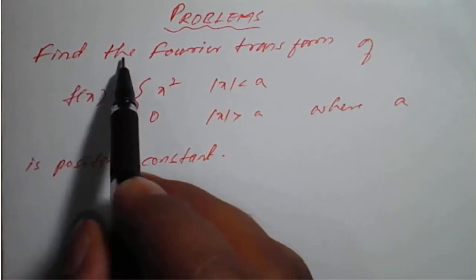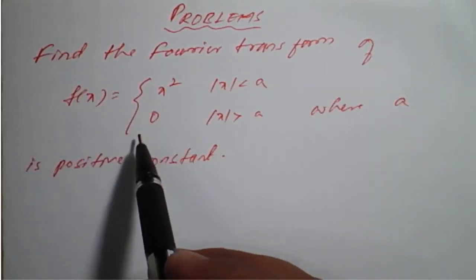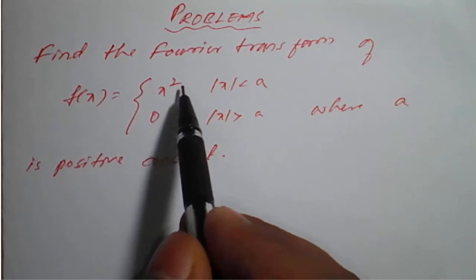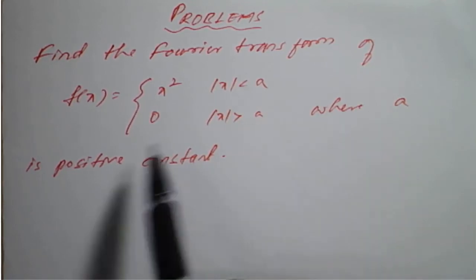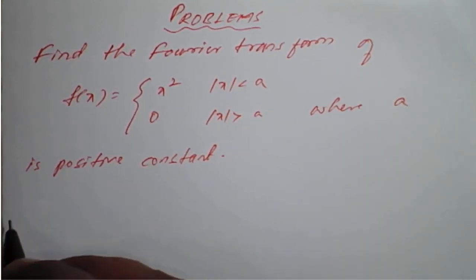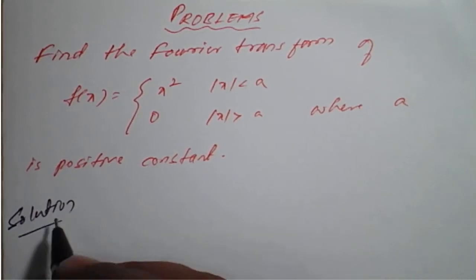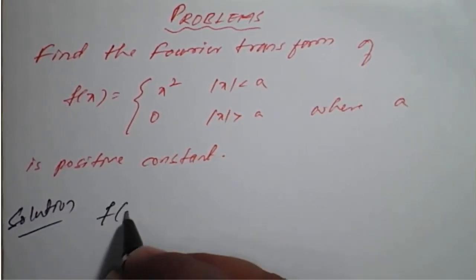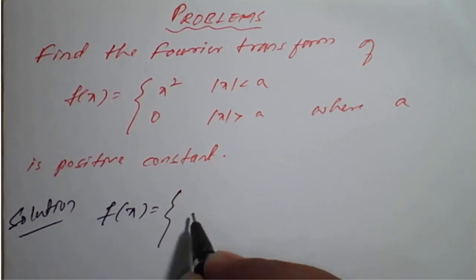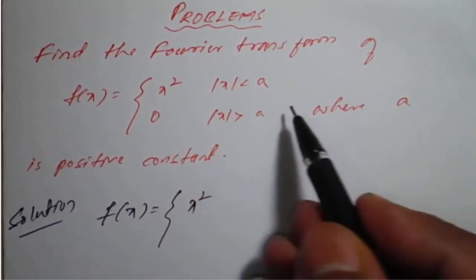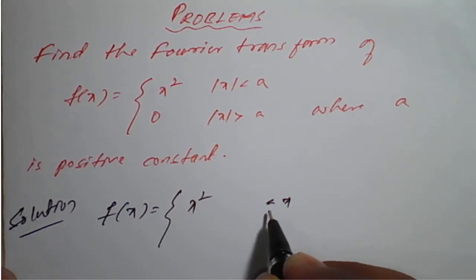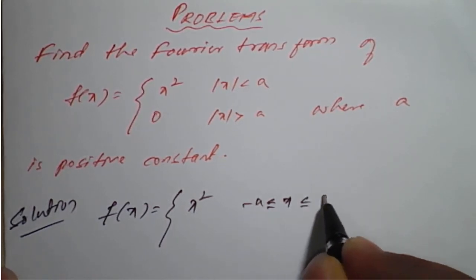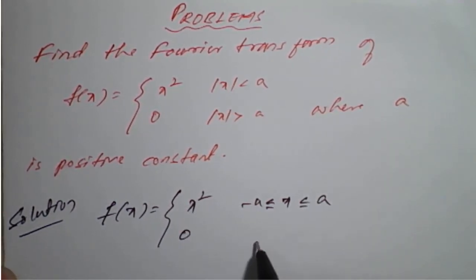The problem is: find the Fourier transform of f(x) = x² for |x| < a, and 0 for |x| > a, where a is a positive constant. The condition |x| < a can be written as x greater than or equal to minus a and less than or equal to plus a, and 0 otherwise.